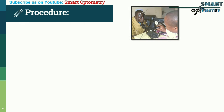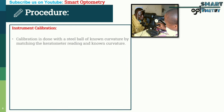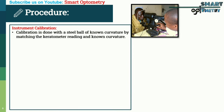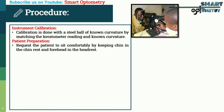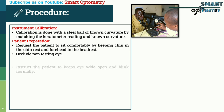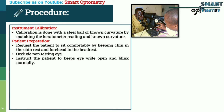Procedure of keratometer. Calibration: calibration is done with a steel ball of known curvature by matching the keratometer reading to the known curvature. Patient preparation: request the patient to sit comfortably with chin in the chin rest and forehead in the headrest. Occlude the non-testing eye and instruct the patient to keep the eye open and blink normally.